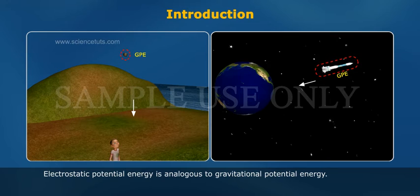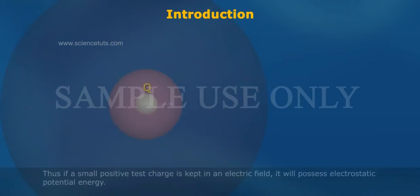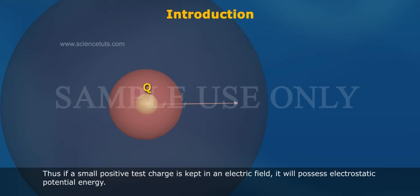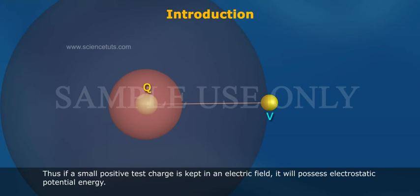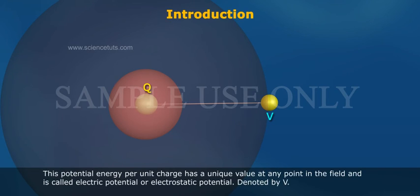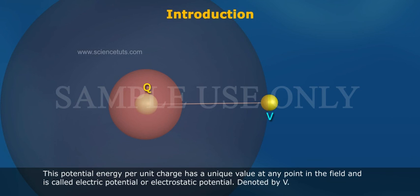Electrostatic potential energy is analogous to gravitational potential energy. Thus, if a small positive test charge is kept in an electric field, it will possess electrostatic potential energy. This potential energy per unit charge has a unique value at any point in the field and is called electric potential, or electrostatic potential, denoted by V.